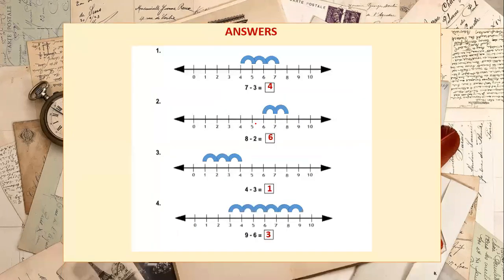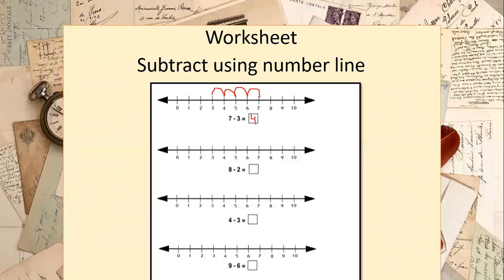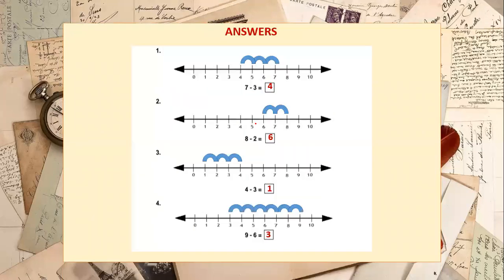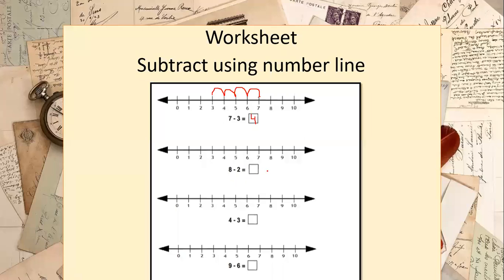Next question: 8 minus 2. We start from 8 and move 2 steps backward. First we come to 7, then to 6. So 8 minus 2 equals 6.